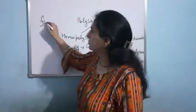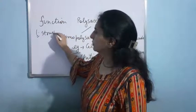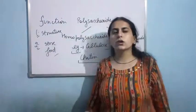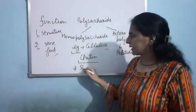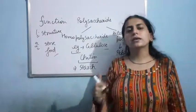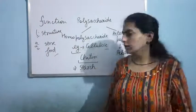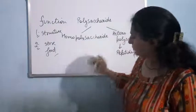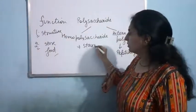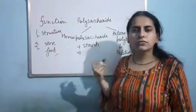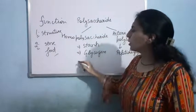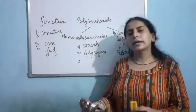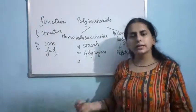The second function of polysaccharides is that they store food. In plants, food is stored in the form of starch, which is a homopolysaccharide. In animals, food is stored in the form of glycogen, which is also a homopolysaccharide. Both starch and glycogen are made up of repeating glucose units, but how many repeating units there are and how they are arranged determines whether it is starch, glycogen, or something else.